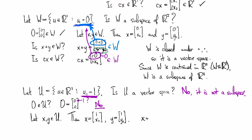But if I look at x plus y, then I'm going to end up with 2 as the first coordinate. And so the sum doesn't satisfy the condition for being a member of the set, namely that the first coordinate should equal 0.